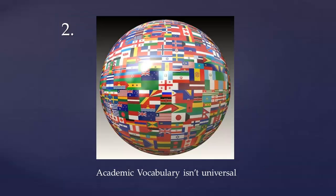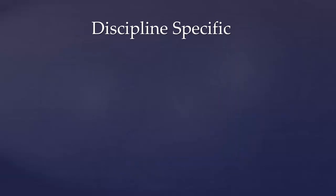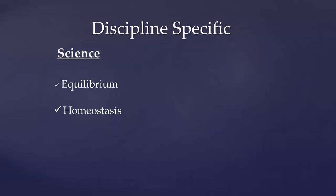Second, academic vocabulary isn't universal. It is often very discipline-specific and there are countless technical terms that go along with each subject. For example, science students are going to need words like equilibrium, homeostasis, and phylogenetic. But humanities students are not likely to come across this vocabulary.